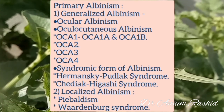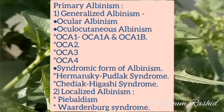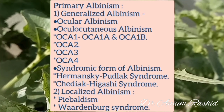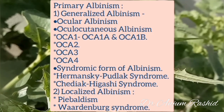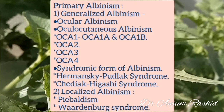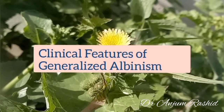The second form of primary albinism is localized albinism, which includes piebaldism and Waardenburg syndrome.